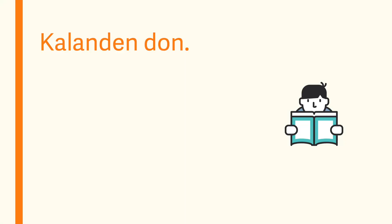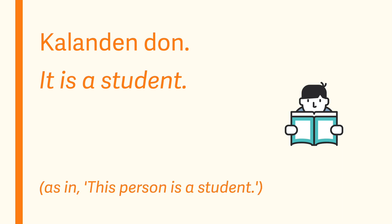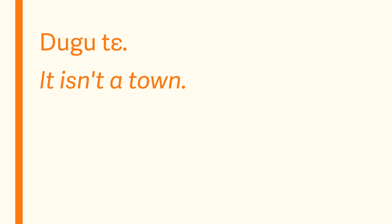The Equative, on the other hand, is used when you need to say that something — a person, place, or idea — is equivalent or equal to another thing. For instance, we already know how to say things like 'Kalandendu,' meaning 'it is a student,' or 'Du kute,' meaning 'it isn't a town.'